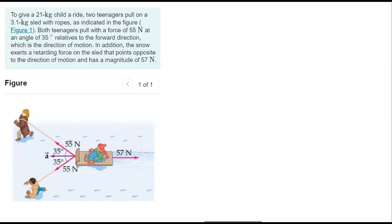In addition, the snow exerts a retarding force on the sled that points opposite to the direction of motion and has a magnitude of 57 newtons. We are going to find the acceleration of the sled and the kid here.